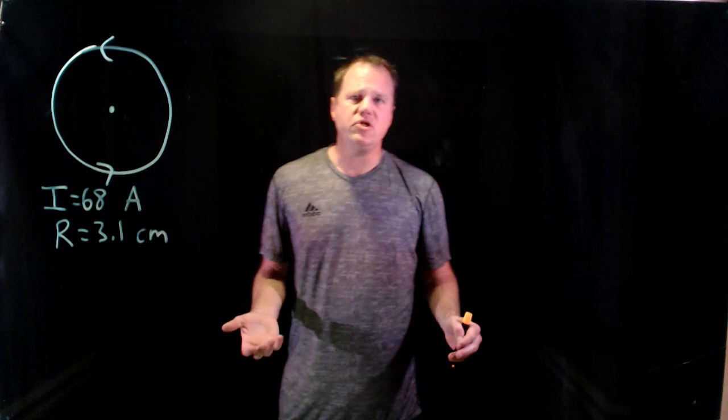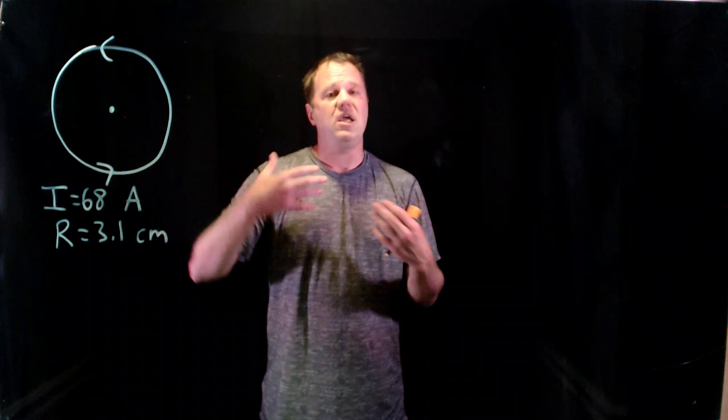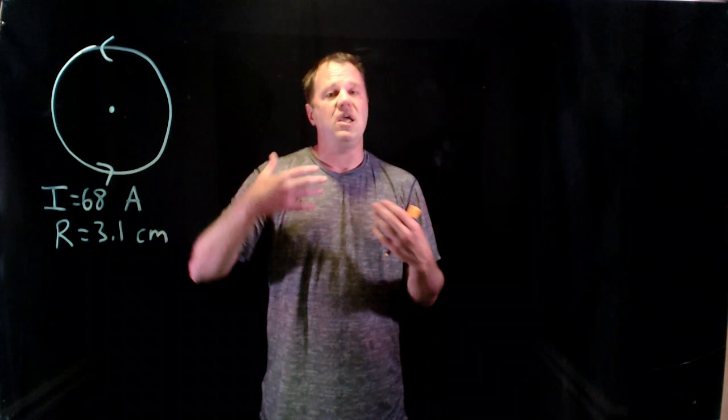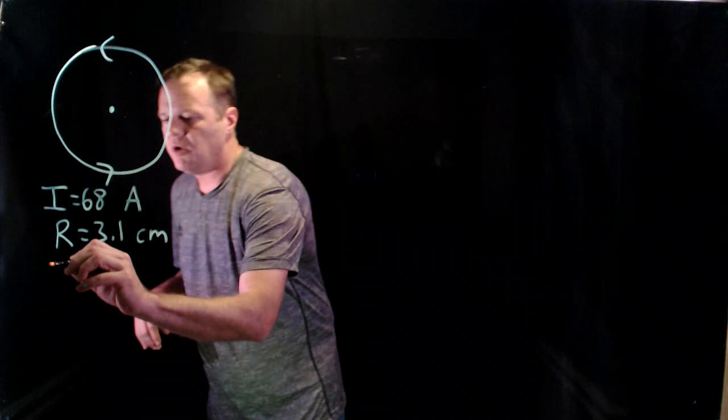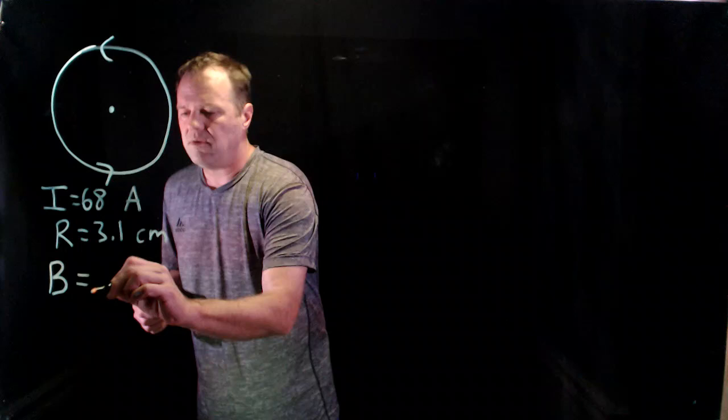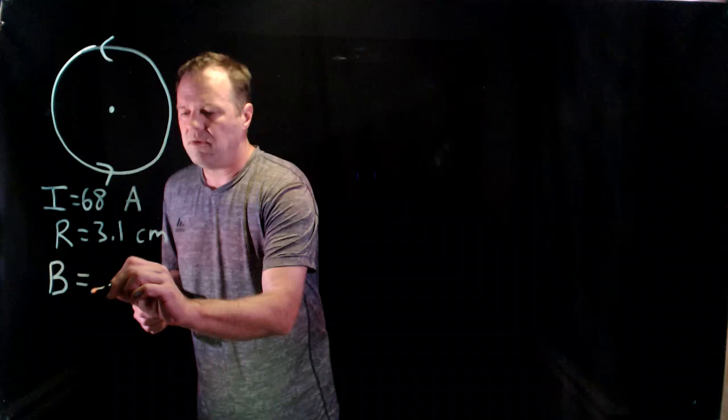It's a fairly straightforward calculation using the special case formula for magnetic field of a loop. Keep in mind that there's special case formulas for long wires, solenoids, single particles moving around, things like that. So it will depend on the situation. So don't overgeneralize this formula. But the magnetic field, symbol B, is mu naught, a fundamental constant associated with magnetism. You'll see it all over the place when you're studying magnetism.